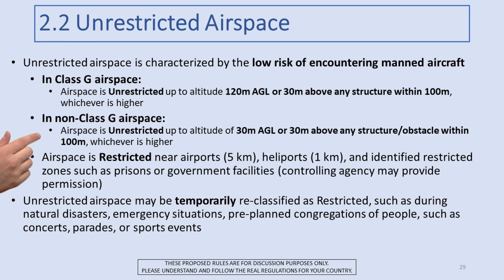The one exception is that airspace is in fact restricted near airports — a five kilometer radius — or one kilometer from a heliport, and any other identified restricted zones such as prisons or certain government facilities. For any of those, the controlling agency may provide permission. Additionally, unrestricted airspace can be temporarily reclassified as restricted, such as during a natural disaster, an emergency situation, or a pre-planned congregation of people such as concerts, parades, or sporting events.